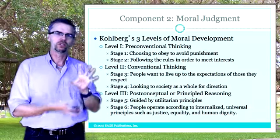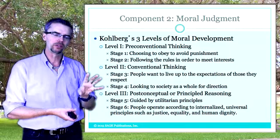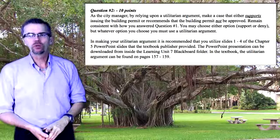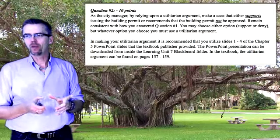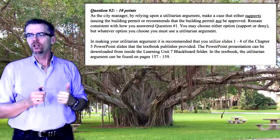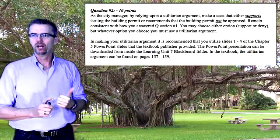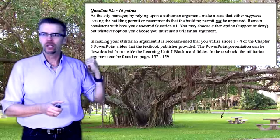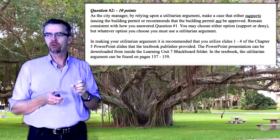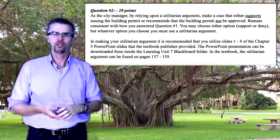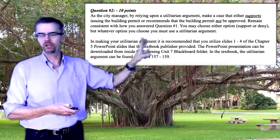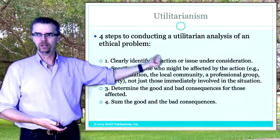Read the whole quiz very carefully before you start answering. For question four, you may actually want to formulate an answer before you come back and answer question one. Question two is worth 10 points. As the city manager, by relying upon a utilitarian argument, make a case that either supports issuing the building permit or recommends that the building permit not be approved. Remain consistent with how you answer question one. Whatever option you choose, you must use a utilitarian argument. The utilitarian argument can be found in the Johnson textbook on pages 157 to 159. The PowerPoint slides are slides one through four of the Chapter 5 PowerPoint, downloadable from Learning Unit 7.